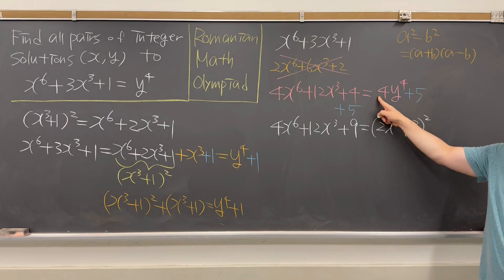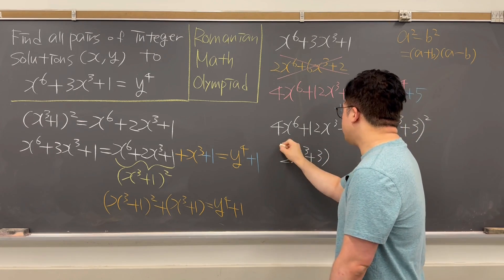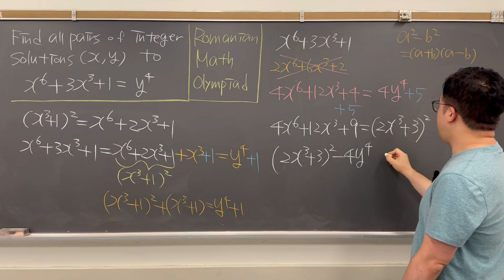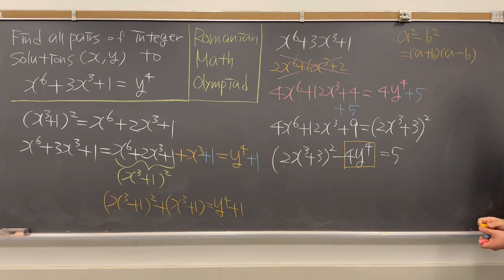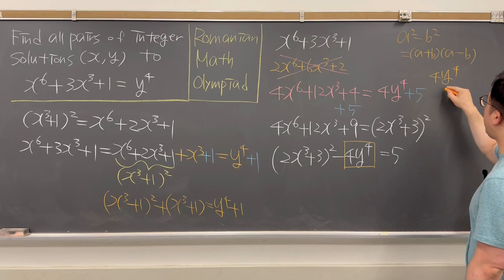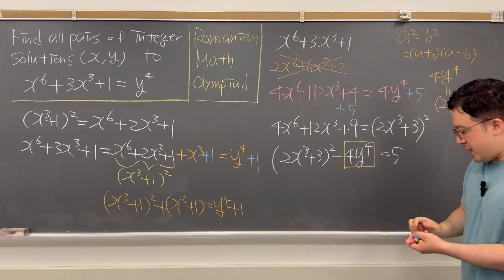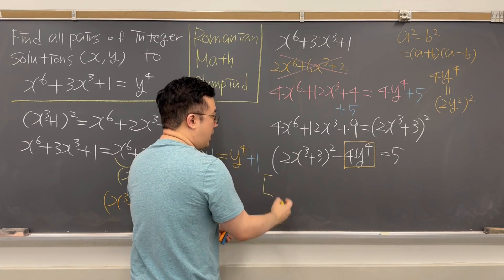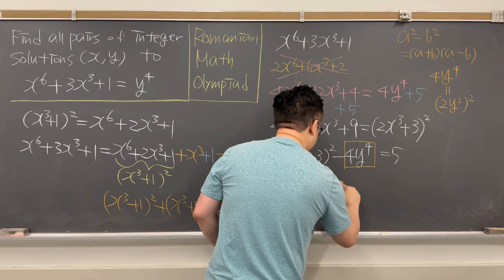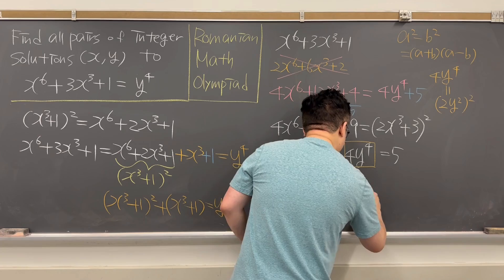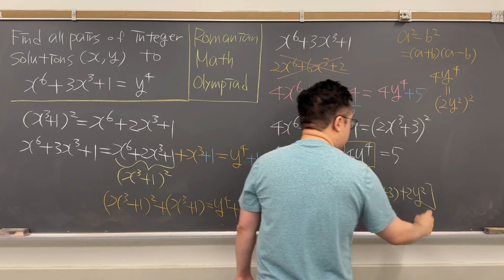If we move 4y to the power of 4 to the left-hand side, we get (2x³ + 3)² minus 4y⁴ equal to 5. Now 4y⁴ is the same as (2y²)², so we can rewrite the left-hand side as a difference of squares: (2x³ + 3 − 2y²) times (2x³ + 3 + 2y²) equals 5.